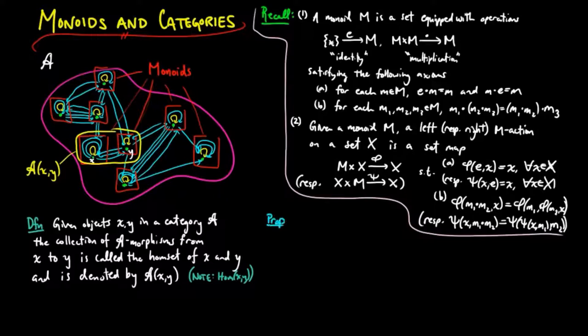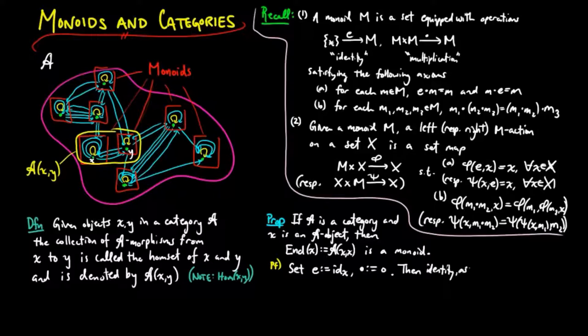We can now show what we alluded to before. If A is a category and X is an A object, then the set of endomorphisms on X is a monoid. The proof is to show that setting E to be the identity on X and multiplication as composition gives us a monoid structure, since the identity axiom and the associativity axioms for a category coincide with the axioms for a monoid given above.